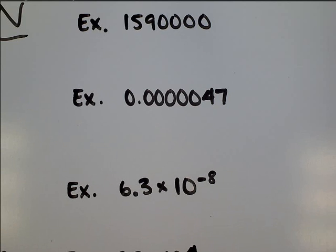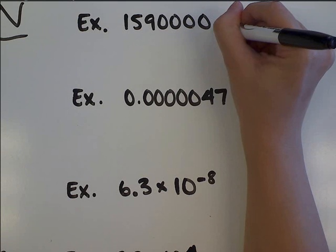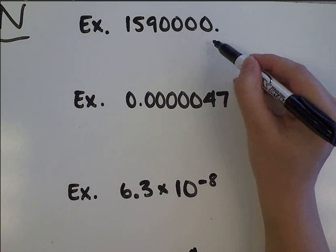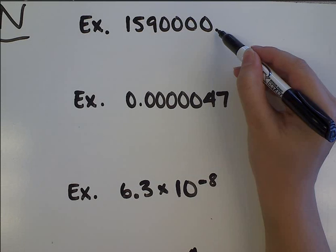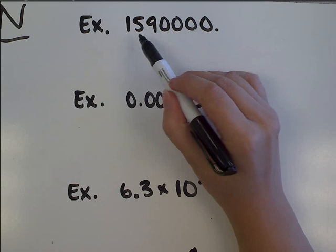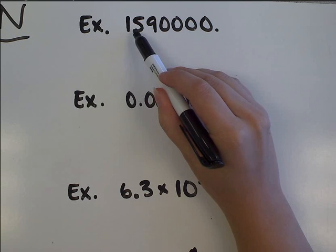The first two examples we start in standard notation and we're going to try to move into scientific notation. So our first example here we've got 1,590,000. That's a big number. I'm too lazy to write the zeros. So what I'm going to do is move the decimal point over. Right now there's an implied decimal point back over here. I need to move it until it's after the very first digit.